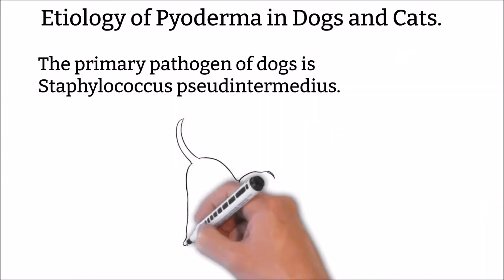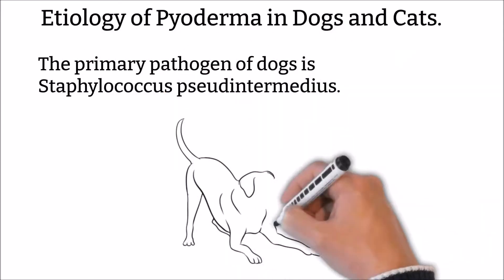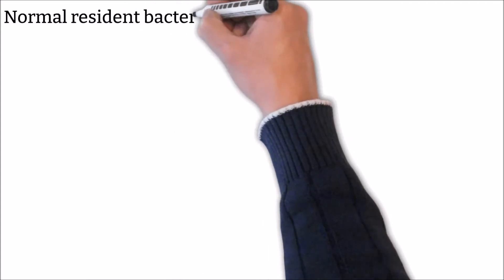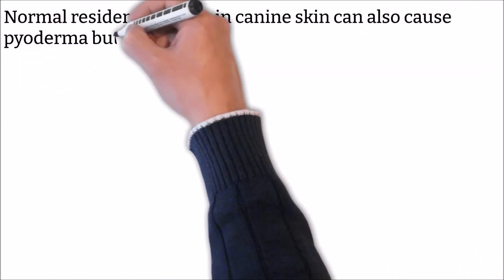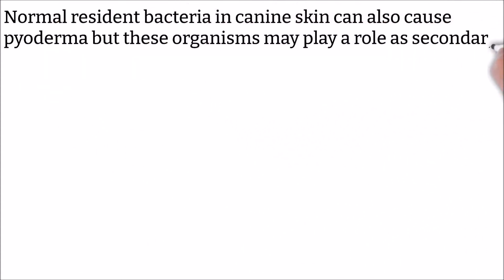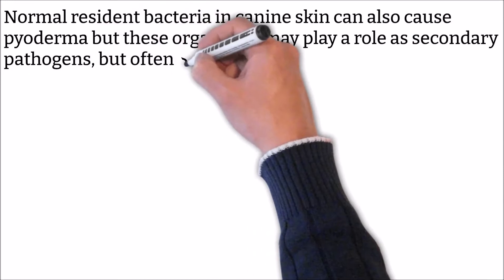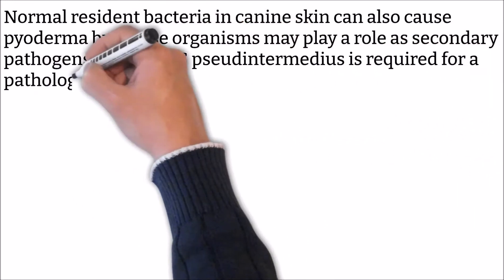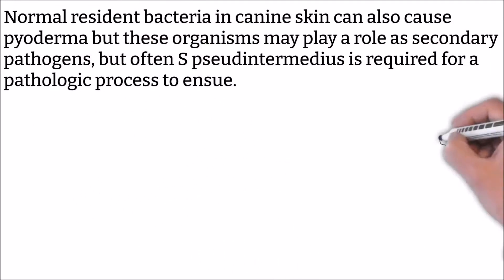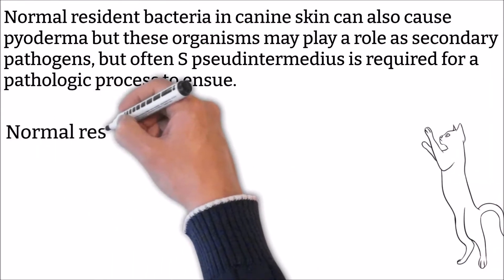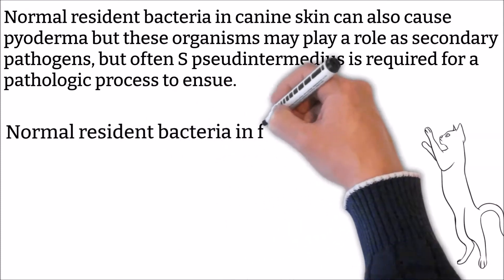The primary pathogen of dogs is Staphylococcus intermedius. Normal resident bacteria on canine skin can also cause pyoderma, but these organisms may play a role as secondary pathogens. Often, S. intermedius is required for a pathologic process to ensue.